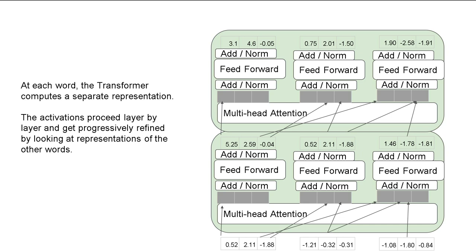If you look at the number of parameters in each sub-component, the feedforward network has many orders of magnitude more parameters than the attention mechanism. You can almost imagine that the attention mechanism tells you which previous positions are important, and the feedforward network pulls information about that representation, enriching and refining it as you go up. The Transformer network is a series of blocks — for any particular position it's like a column, with many blocks. There's a column for each separate position in the input sequence, and the attention mechanism is where previous positions are integrated into the current position's representation.